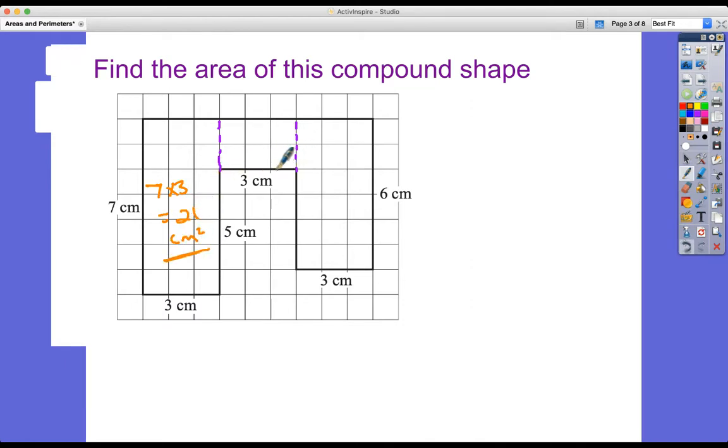So seven times three equals 21 centimeters squared. This one here is three. But then we need to think a little bit more about what its width is here. Well, actually, we've got the squares to help us, haven't we? Because if this is seven, let's just check. Three, five, six, seven. Yeah, let's just count the squares. So this is two and this is three. So this would be two times three, which is six centimeters squared.